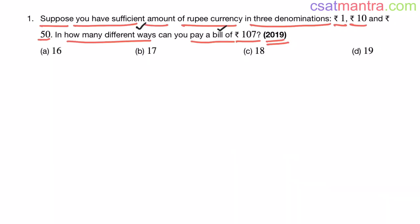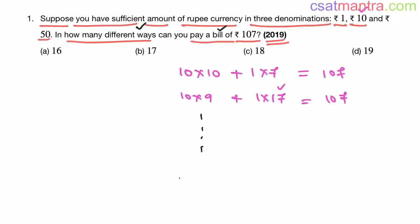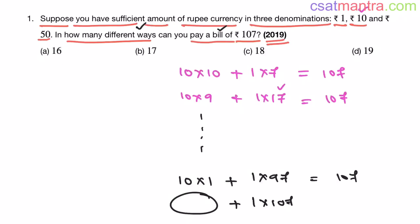The next case: when we don't use any 50-rupee notes. Using maximum 10-rupee notes: 10 tens and 7 one-rupee coins = 107. Using 9 tens: 17 one-rupee coins. Continuing similarly down to 1 ten-rupee note: 97 one-rupee coins. And using no 10-rupee notes at all: 107 one-rupee coins. That gives us 11 ways in this case.